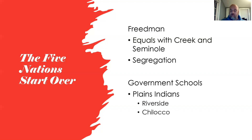The first and oldest federal government school for Indians still existing today is the Riverside Indian School in Anadarko, also known as the Wichita Caddo School. You also have the development of the Chilocco Indian School in 1884, a boarding school built to educate plains Indian children. When it first opened, those students were pretty scared — it was something they had never experienced. Students studied academic subjects in the first half of the day.